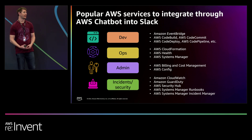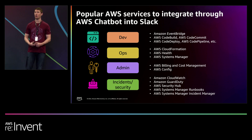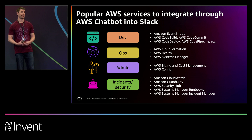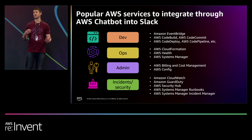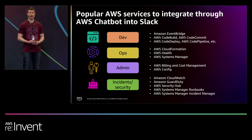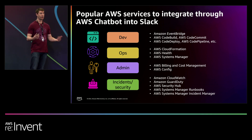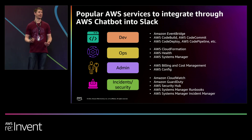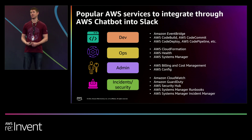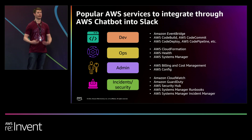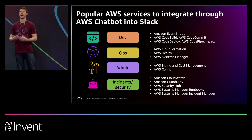For developers, you can get events piped in through EventBridge or notifications through your CI/CD services through AWS. For operators, you can manage environments and get updates on health with CloudFormation or AWS Health. For admins, you can track budget quotas and make sure you're not overspending with billing and cost management, or get compliance notifications with AWS Config. And when something goes wrong, you bring in CloudWatch and GuardDuty to alert you to exactly what's happening so you can quickly take action.